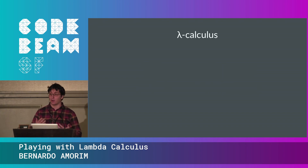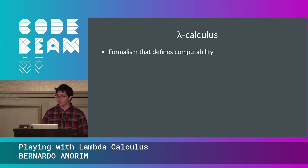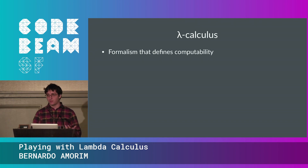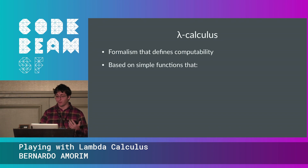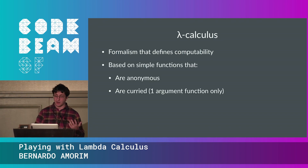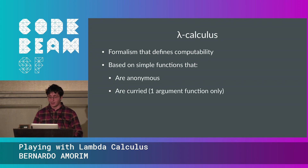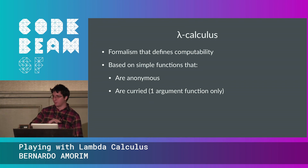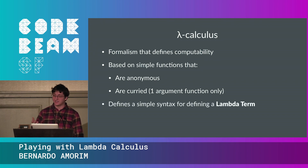Lambda calculus is a formalism to define computability. It builds on the idea of computable functions by simplifying them greatly. All functions are anonymous — we don't give named functions — and all functions are curried, meaning every function receives exactly one argument. This talk is going to be a high-level overview.